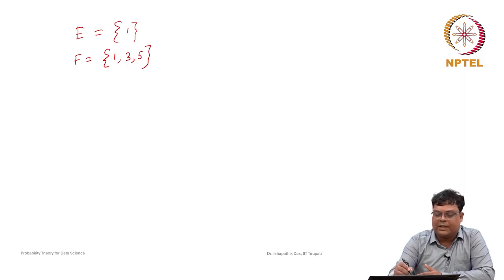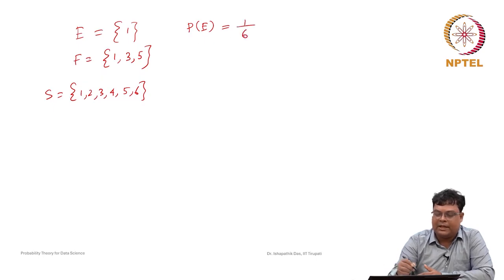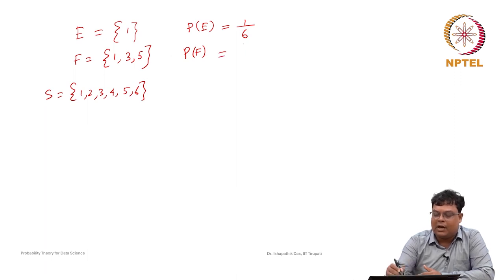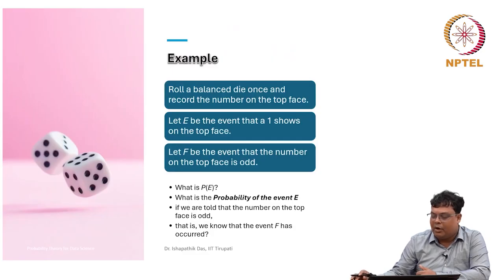The sample space S = {1, 2, 3, 4, 5, 6}. From the classical approach, P(E) = 1/6. P(F) = 3/6 = 1/2, since F contains 3 equally likely points out of 6. The question is: what is the probability of event E if you are told that the number on the top face is odd?